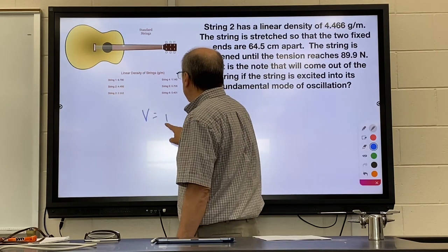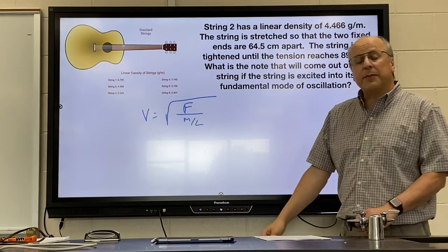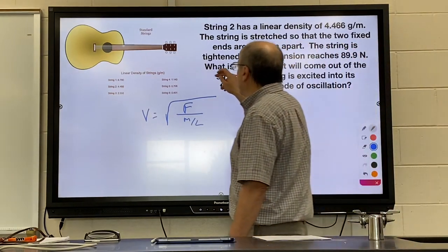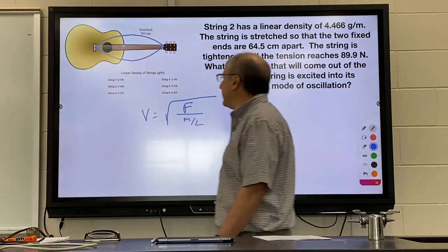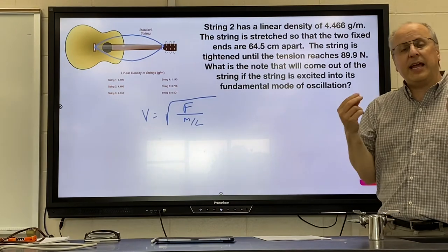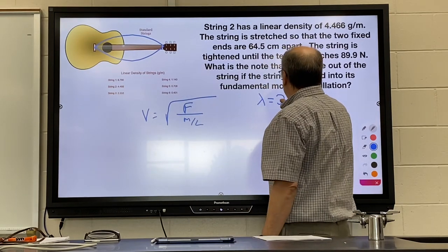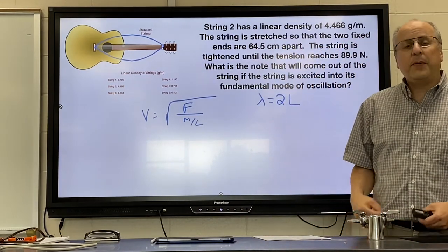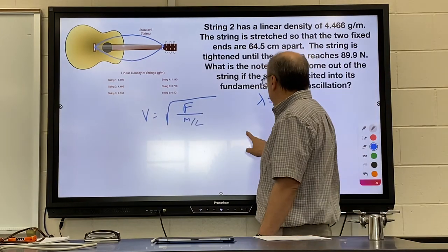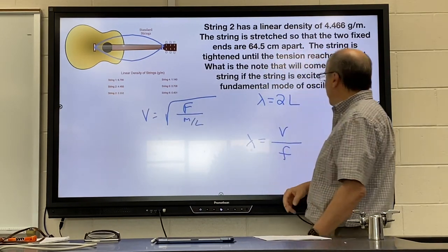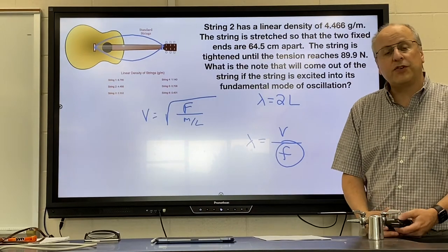Start by plugging in your tension and linear density to find the speed of the wave — you should get something in the hundreds; try not to round it. Since we're looking at the fundamental, it's going to look like a node on each end and half a sine curve in between. The wavelength of that sine curve should be double the length of the string, because half of a sine curve is fitting in that length. Once you know the velocity and the wavelength, use the wave formula to find the frequency that comes out of that string. Give it a try and see what you get.